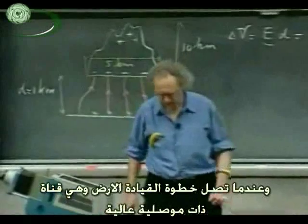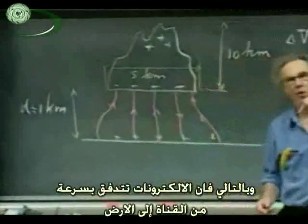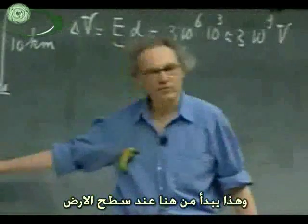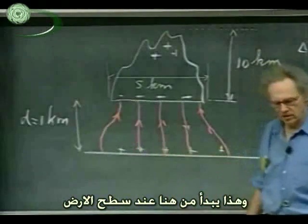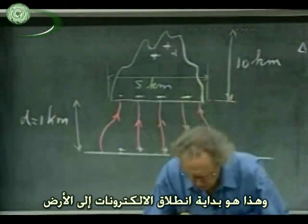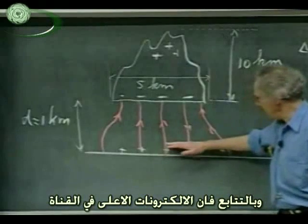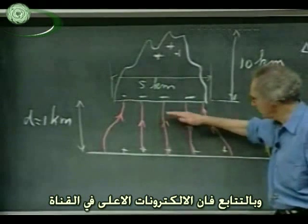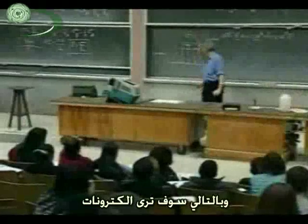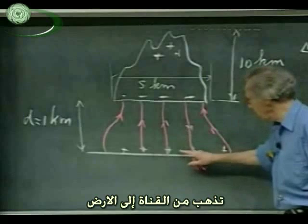A highly conductive channel forms, and electrons can now very quickly flow from this channel to the ground. That starts first right here at the surface of the earth — that's where the electrons will first go to the earth. And then, successively, electrons which are higher up in the channel will make it down to the earth. So you're going to see electrons going through the channel to the earth.